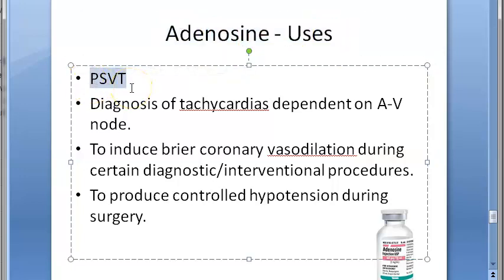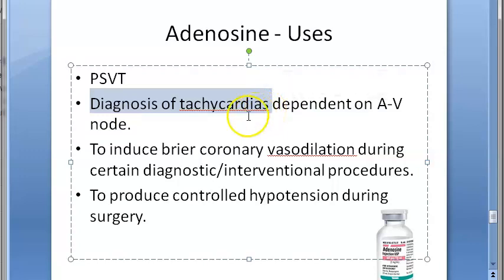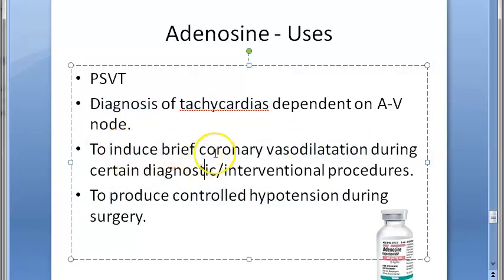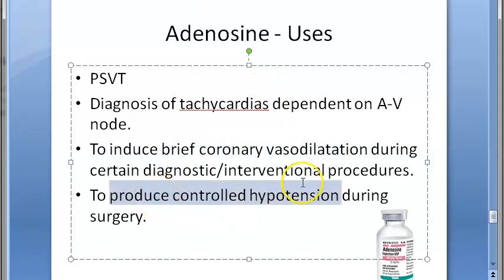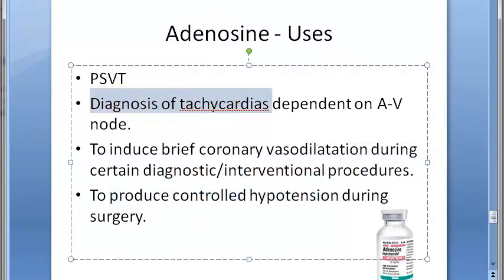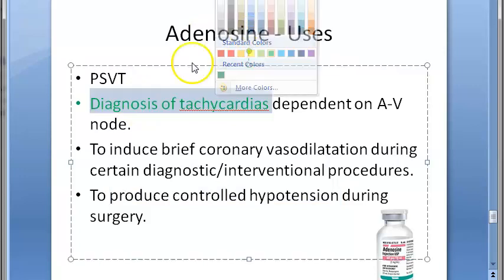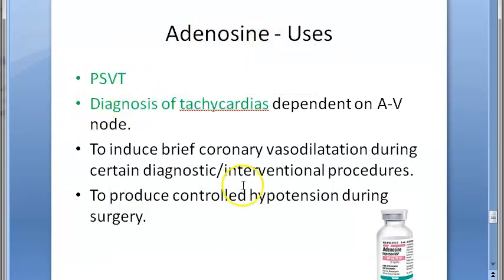The uses of adenosine are: first, to treat paroxysmal supraventricular tachycardia; second, in the diagnosis of tachycardias dependent on the AV node; third, to induce coronary vasodilation; and fourth, to produce controlled hypotension. The primary clinical uses emphasized are PSVT treatment and diagnosis of AV-node-dependent tachycardias.